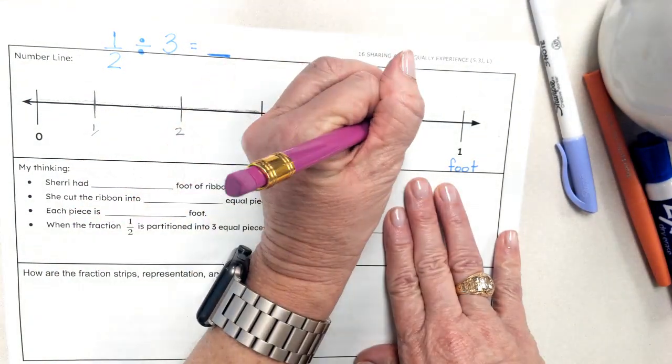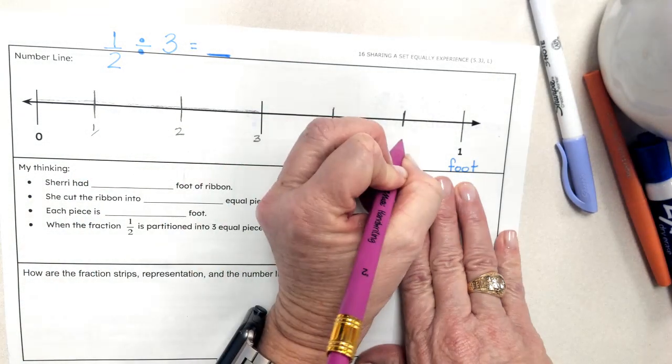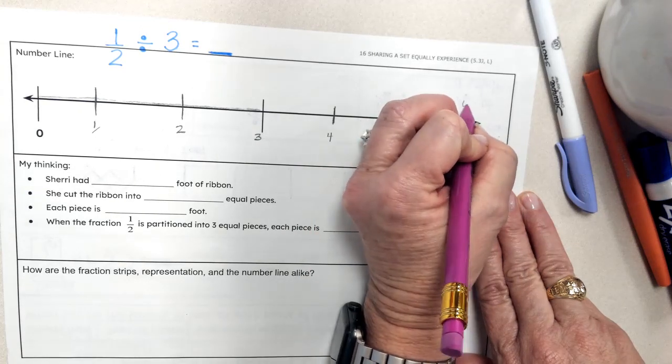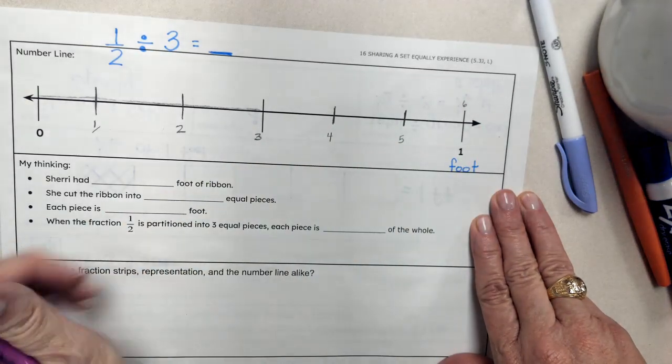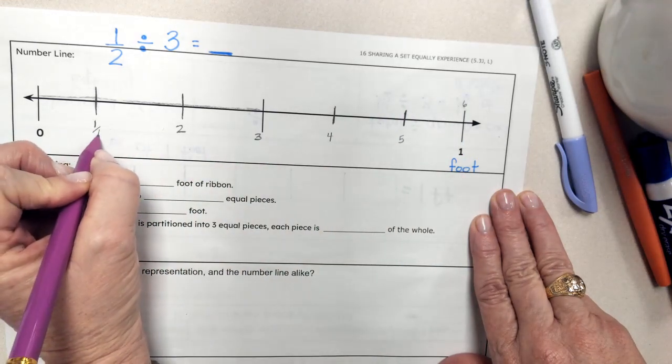I'm going to cut it as well. So that makes number four, that makes number five, and of course, this makes number six. So since there's six total pieces, my denominator is going to be six.